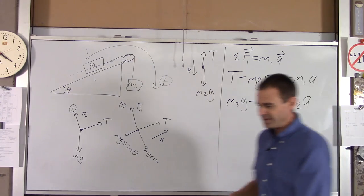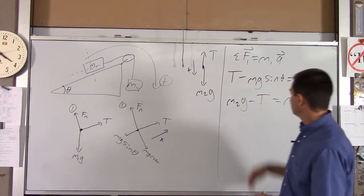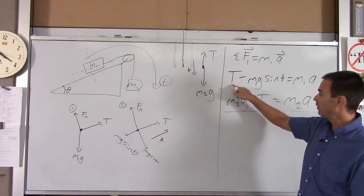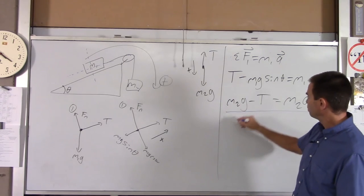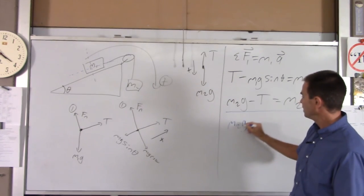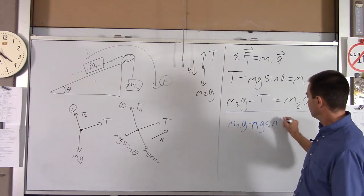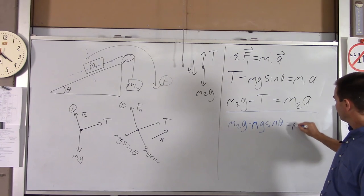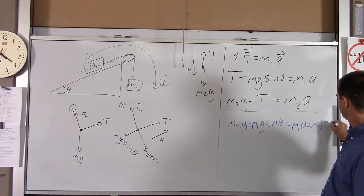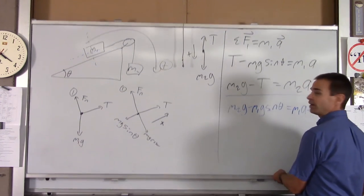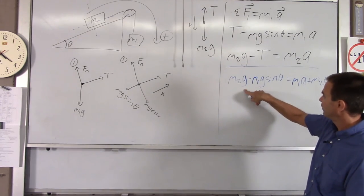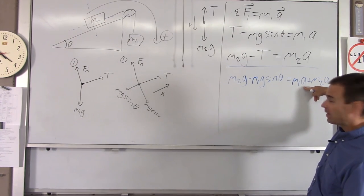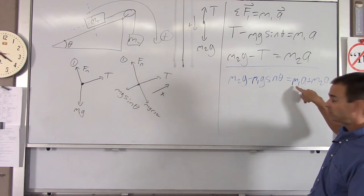So without numbers, one easy thing to do here is just to add your equations together. On the left side, the tension's going to drop out. You have a T here and a minus T there. These will be M2G minus M1G sine theta. On the right-hand side, you've got M1A plus M2A. And then if you do a little bit of math, so for instance, on the left side, we factor out the G. On the right side, we factor out the A. If you factor out the A on the right side, you end up with A times M1 plus M2.